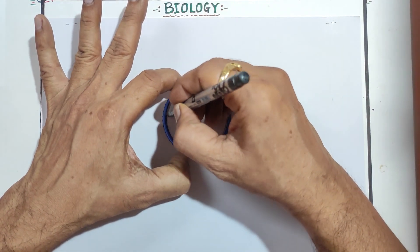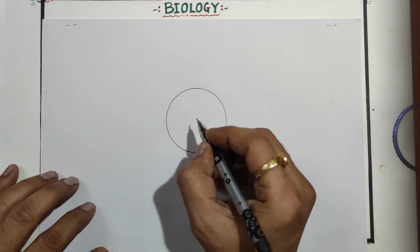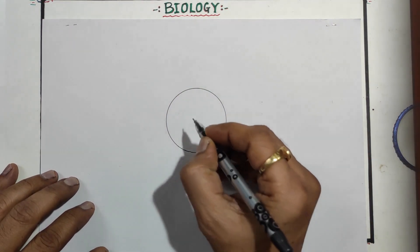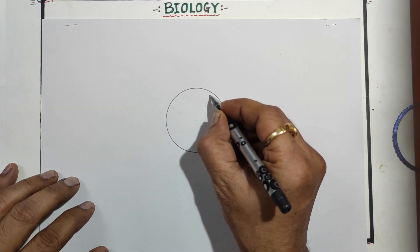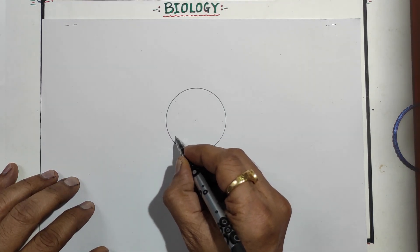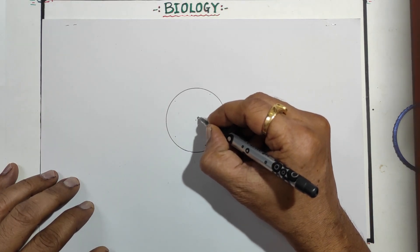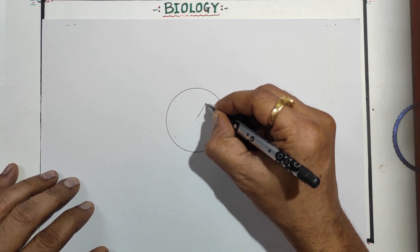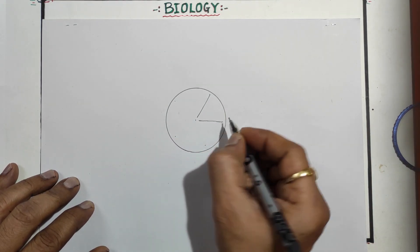Take one center and you have to draw the five locules, so make five dots at approximately equal distance. Now without touching the center, draw one line like that. Here draw another line.